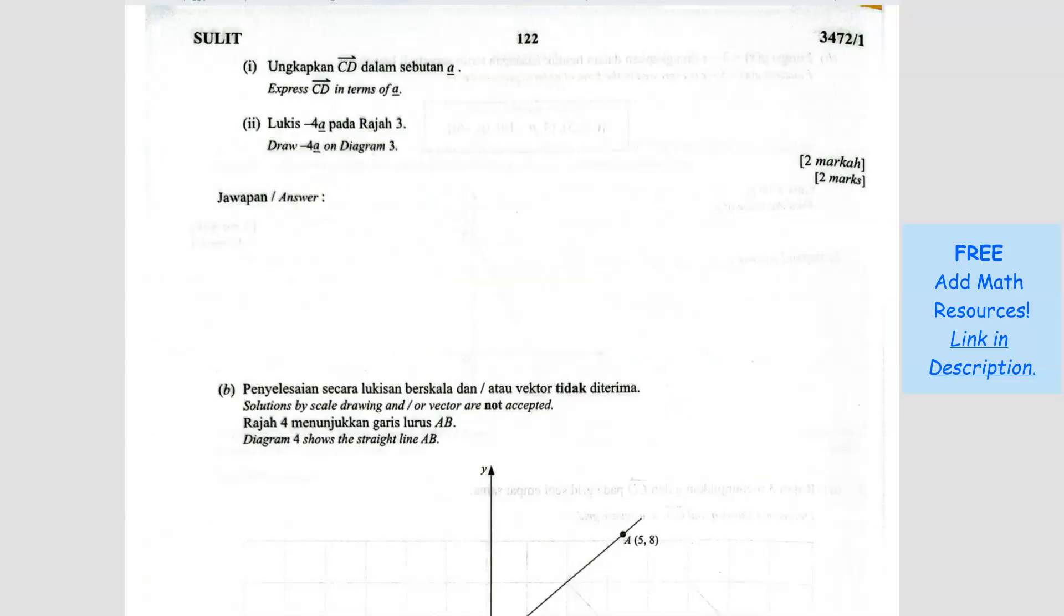So we can write CD is two and a half of A. You can write this or you can write in fractions as well. It's up to you. Done.